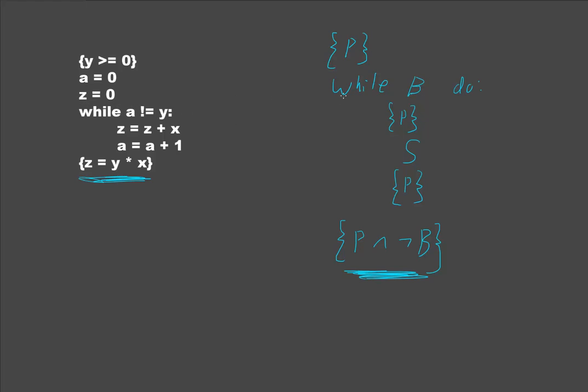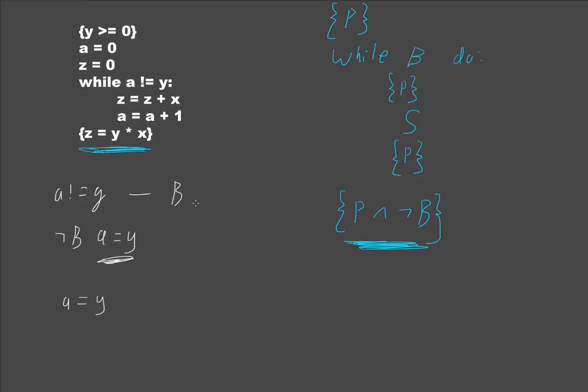So, a does not equal y, is represented as b, therefore, not b, is a equals y, and since that is our b statement, and we know for certain that not b is true at the end, we actually know, when we finish, our first piece of known information, is that a equals y, we know that a equals y, we know that for certain, when the loop terminates, a equals y.